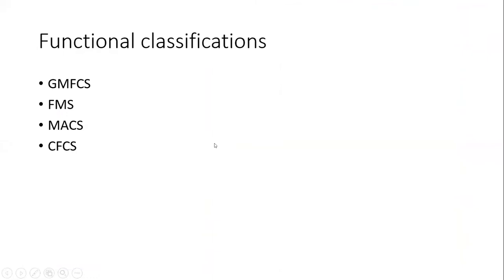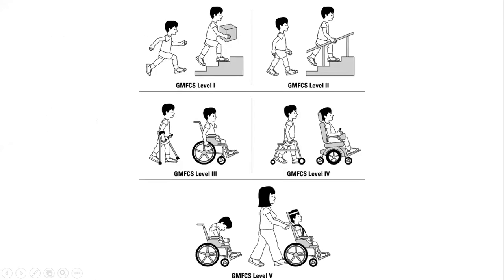There are functional classifications. GMFCS is the language of cerebral palsy — everybody talks about CP in the language of GMFCS. Other classifications include the Functional Mobility Scale, Manual Ability Scale, and CFCS used by speech and language therapists. There are many different classifications and an endless list.